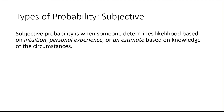Our last type of probability is subjective probability, and this is when someone makes an educated guess. Like if a doctor tells you that he thinks you have a 90% chance of recovery, that doesn't necessarily mean the doctor thinks 9 out of 10 people recover — he's probably just trying to convey that he thinks you'll be fine even though you can never guarantee that medically. We don't do a whole lot with subjective probability in this class because it really is just personal guesses.